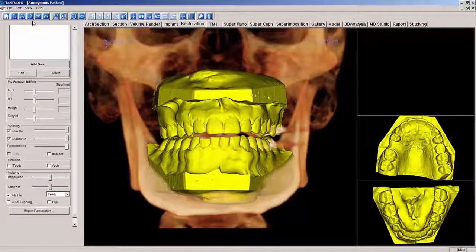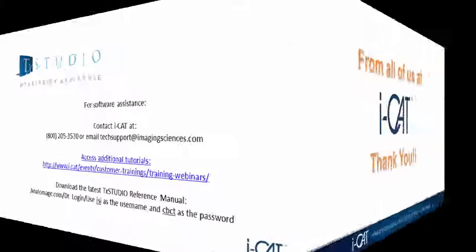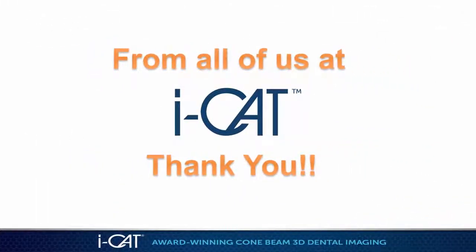This concludes our tutorial on STL model import and registration to a CBCT volume. For additional information, consult the Treatment Studio 5.3 Reference Manual or call iCAT Technical Support at 800-205-3570 Option 5. You may also access additional Treatment Studio tutorials by going to our website i-cat.com and choosing Events, then Customer Trainings and Online Tips and Tricks Webinars. Among the available tutorials are Implant Planning and Placement, Tracing the Inferior Alveolar Nerve, Custom Abutment Design, and Implant Restoration Planning and Placement. From all of us at iCAT, thank you for joining us today.